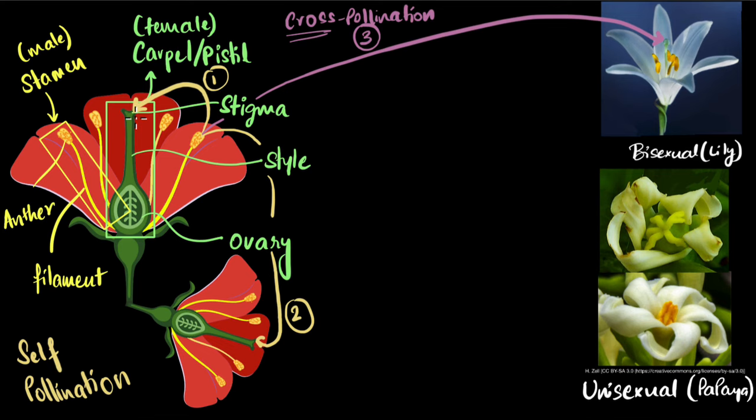But how does the pollination happen? Well, it usually happens via wind or it can happen by insects. Insects love to sit and suck the nectar from the flower, right? So that time the pollen grains can get stuck to them. And when they go and sit on a different flower, it's possible that the pollen grains get stuck to the stigma.